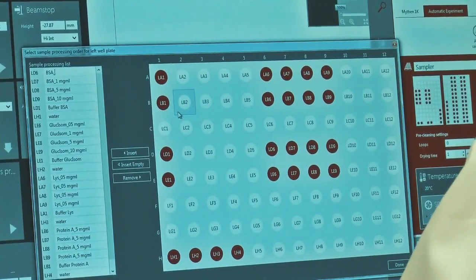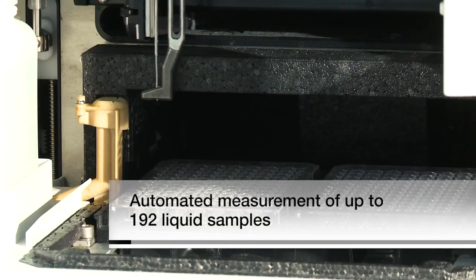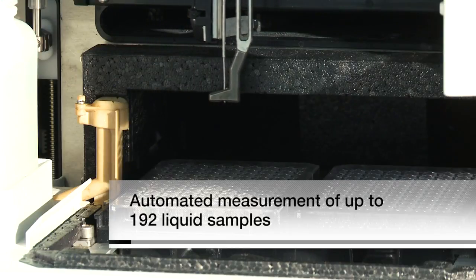The SAXS space's auto-sampler lets you measure up to 192 liquid samples automatically, day and night.